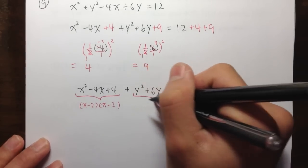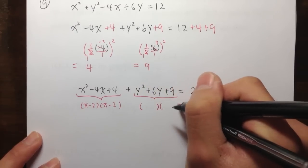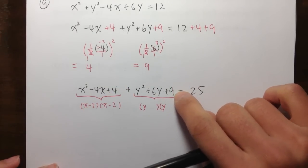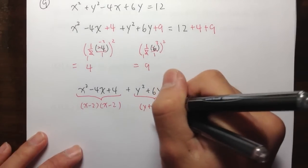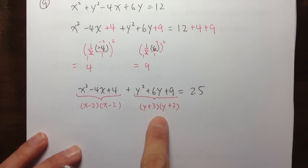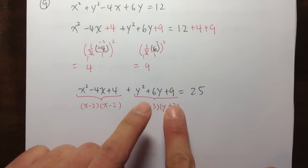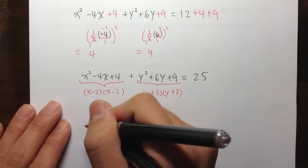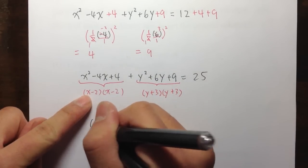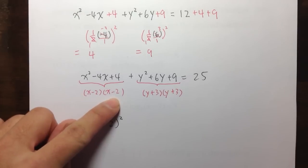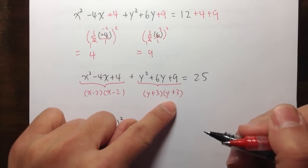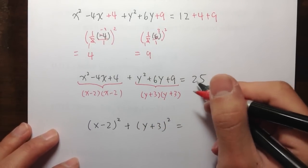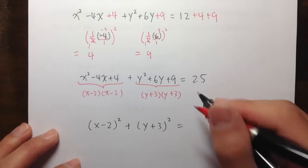We can do the same for the y. Factoring y squared plus 6y plus 9 — putting two parentheses, for y squared I need y and y, and two numbers that multiply to 9 and add to 6: positive 3 and positive 3. Since we always get two of the same factor when completing the square, I can write this as x minus 2 squared, plus y plus 3 squared, and that equals 25 — which I'll write as 5 to the second power.